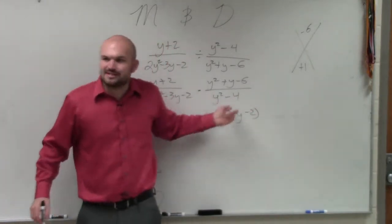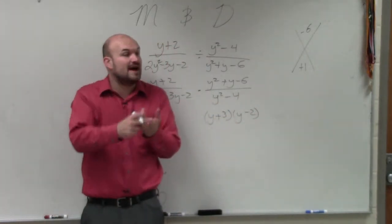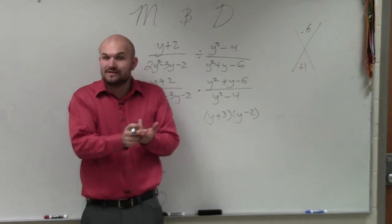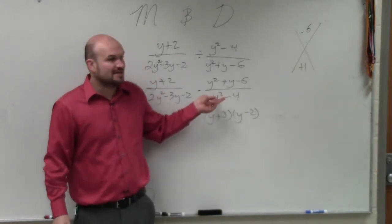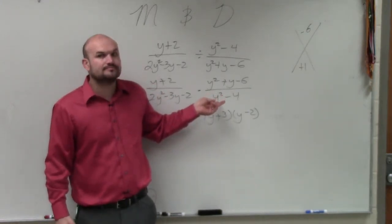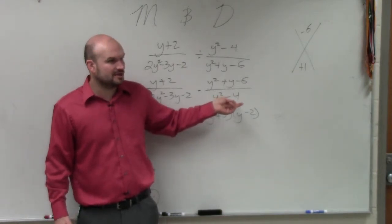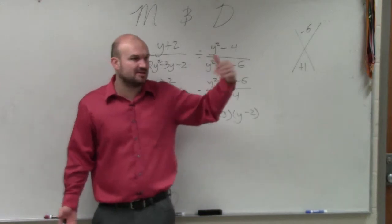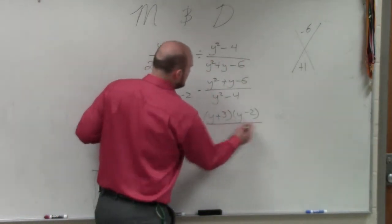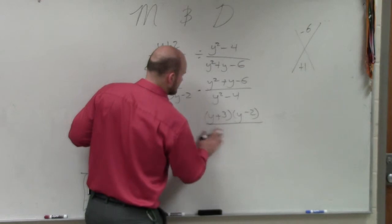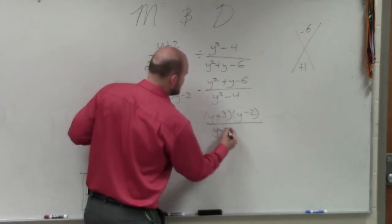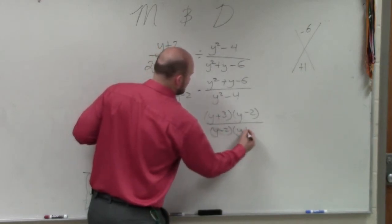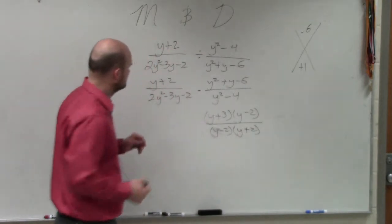Then, automatically, any time I see two terms, I either think factoring out the GCF or difference of two squares. Is y squared a squared term? Is 4 a squared number term? Yeah, so I can apply the difference of two squares: a squared minus b squared is a plus b times a minus b, which I wrote down last video. So this would be y minus 2 times y plus 2.